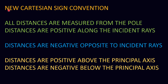New Cartesian Sign Convention, new Cartesian Sign Convention: all distances measured from the pole — distances are positive along the incident direction, distances are negative opposite to the incident direction, distances are positive above the principal axis, distances are negative below the principal axis.